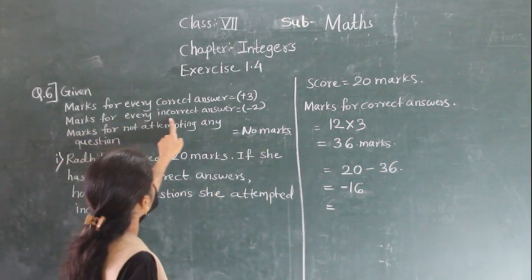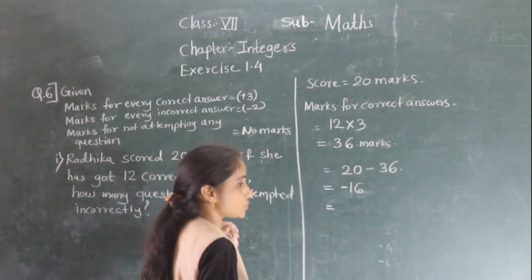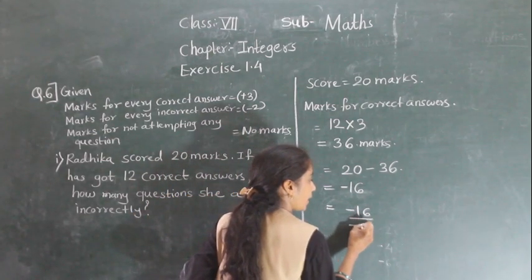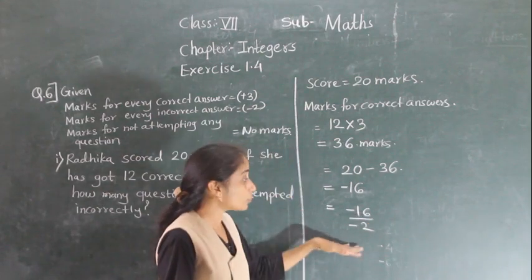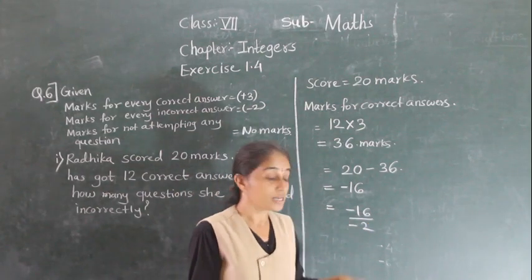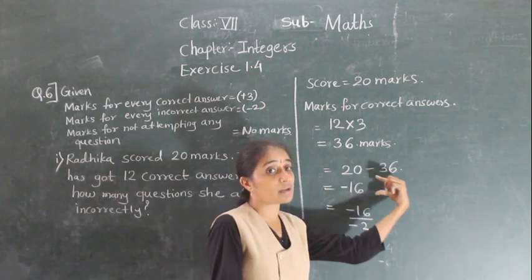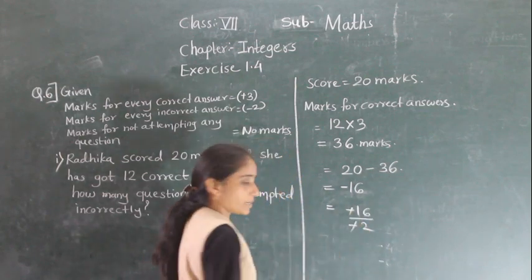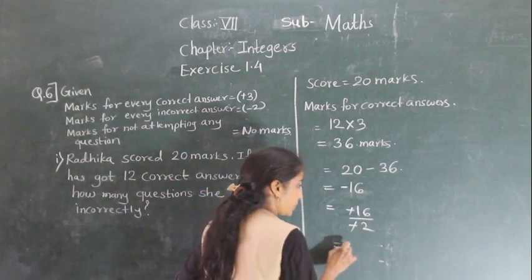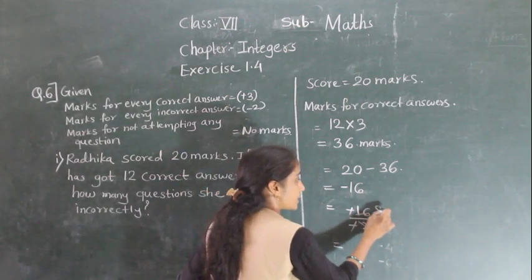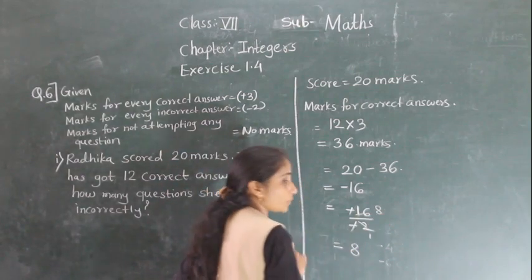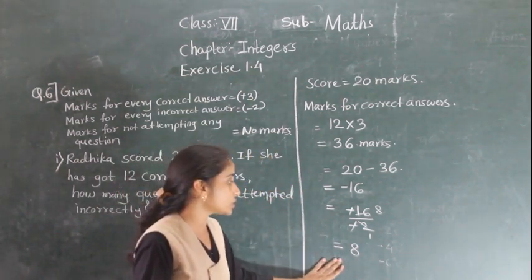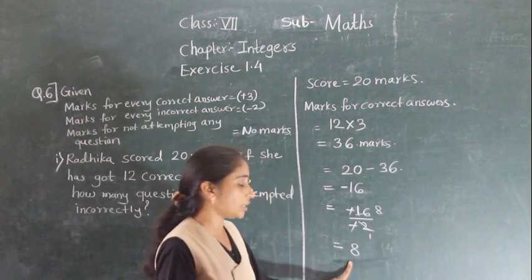Marks for every incorrect answer is minus 2. So to find the number of incorrect questions: minus 16 divided by minus 2. Minus minus gets cancelled to give plus, so 16 divided by 2 equals 8. She got 8 questions incorrect.